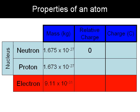The charge of each component is as follows. The neutron has zero charge, hence the name neutron or neutral. The proton has a relative charge of plus one. An electron has a relative charge of minus one. This means that the proton and electron have the same charge but opposite sign.